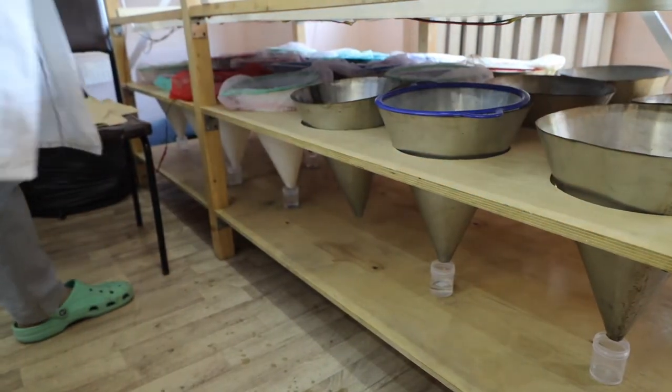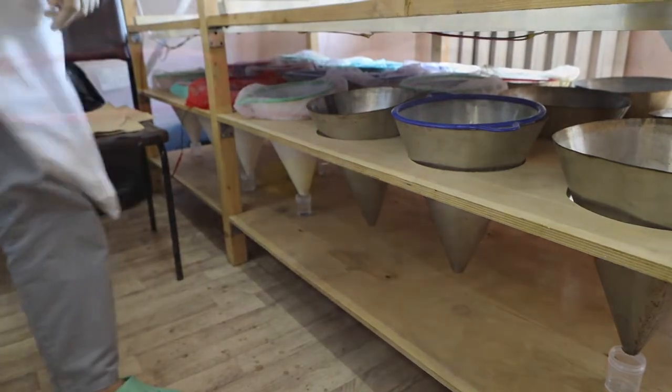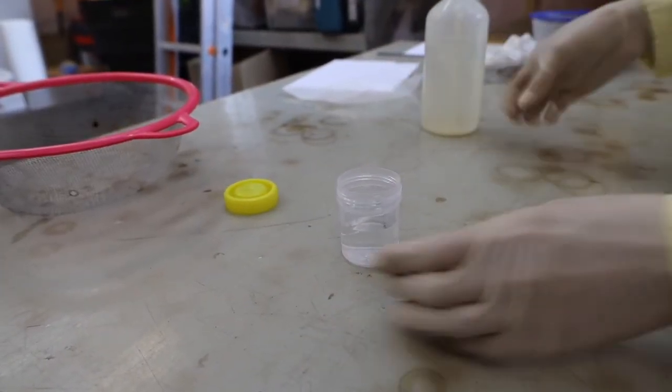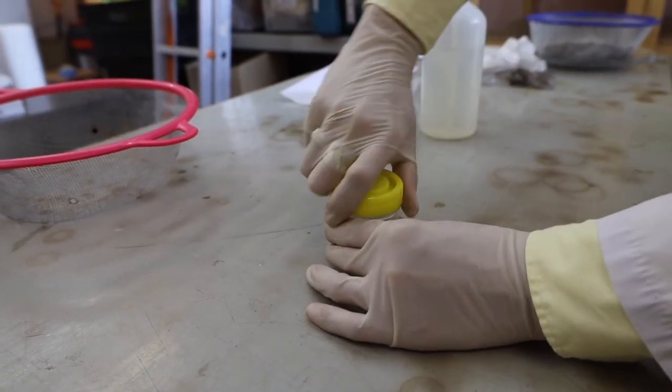When the extraction is finished, we remove the vials, fill them with 96% ethanol, and close them. Don't forget the labels and store vials in the freezer.